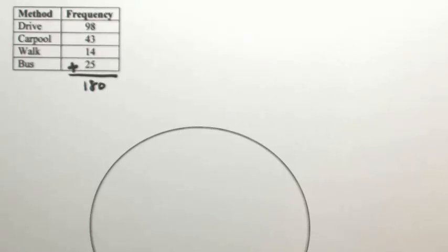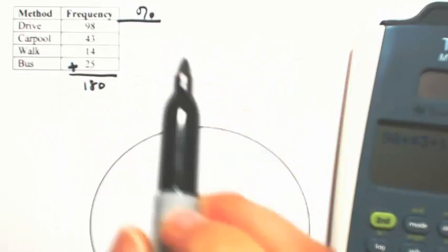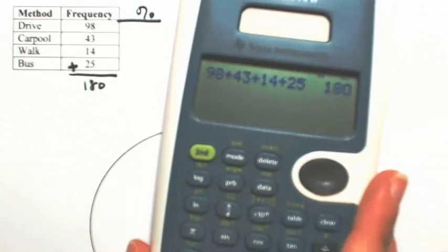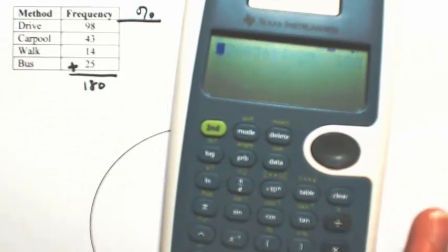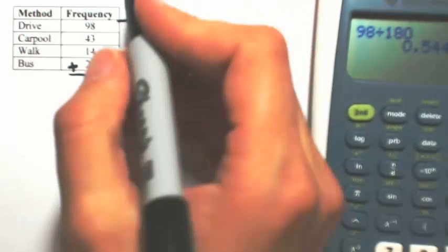So to figure out how much each of the pie is going to be for each method, we're going to divide each number by the 180. So let's figure out what the percentage is going to be by taking each number and dividing it by 180. So 98 divided by 180 is about 0.54. So as a percentage, it's about 54%.